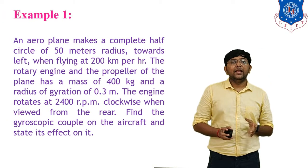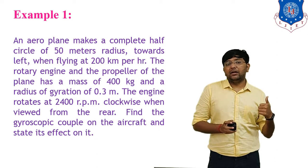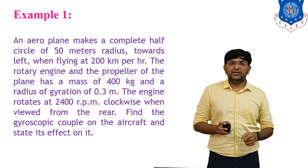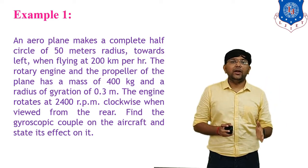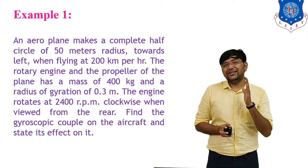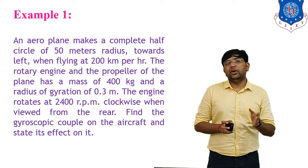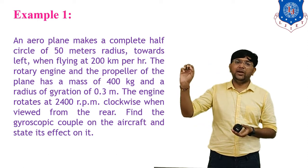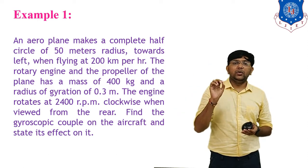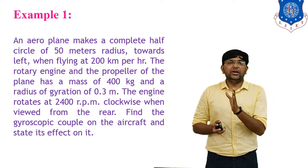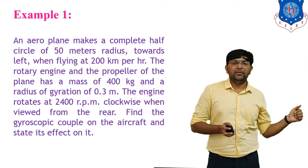The basic data for the numerical: an aeroplane makes a complete circle of 50 metre radius — this is the radius of curvature, capital R = 50 metres — towards the left, meaning the aeroplane takes a left turn. It is flying at 200 kilometres per hour; this is the linear velocity and you must convert it to metres per second by multiplying by 1000/3600, giving approximately 55.6 m/s.